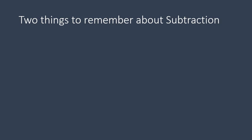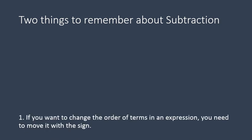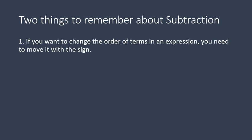Now there are two things to remember when talking about subtraction that might get a little complicated. Number one: if you want to change the order of terms, you need to move the term with its sign. Subtraction is not commutative — 2 minus 1 is not the same as 1 minus 2. So if you're going to move things around, you've got to make sure to move the sign with the number.